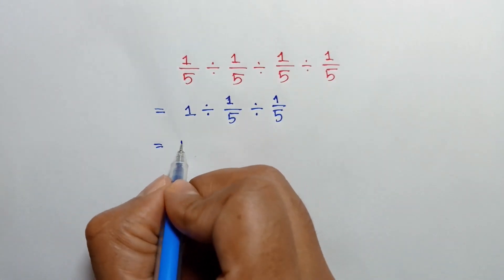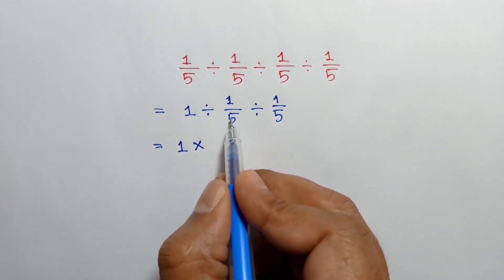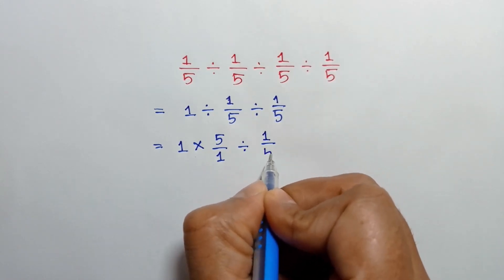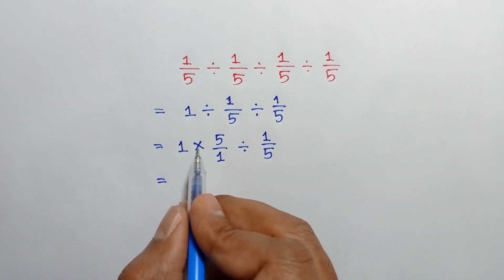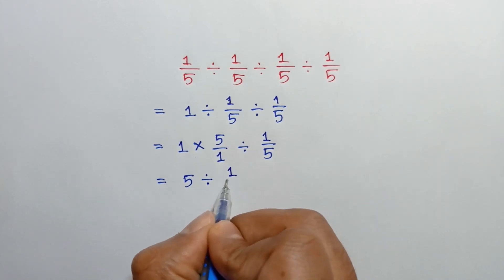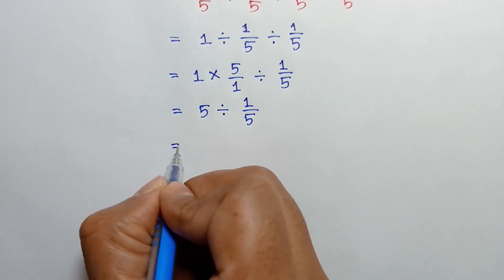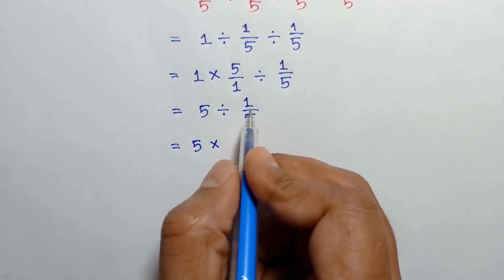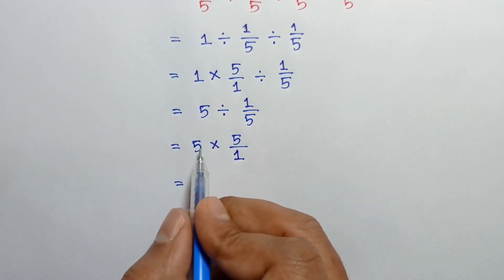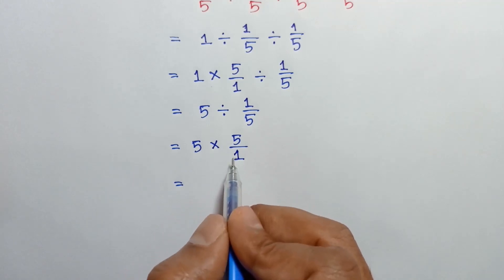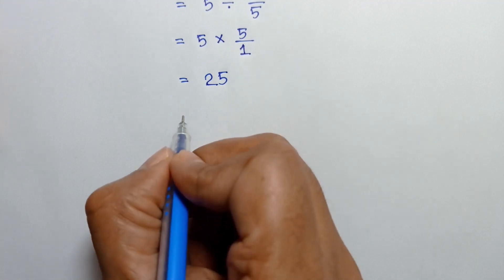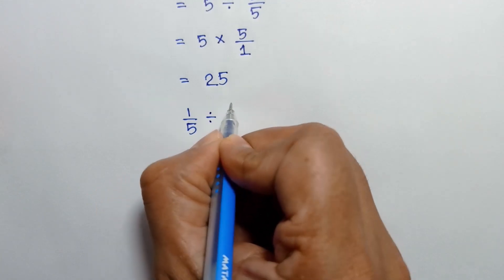This is equal to 1 times the reciprocal of 1 over 5, which is 5 over 1, divided by 1 over 5. That equals 1 times 5 over 1, which is 5, divided by 1 over 5. Then 5 times the reciprocal of 1 over 5, which is 5 over 1, equals 5 times 5 over 1, which is 25 over 1, equal to 25.